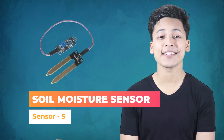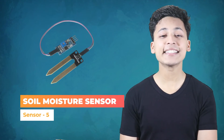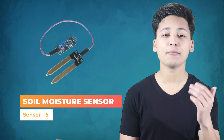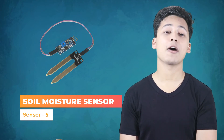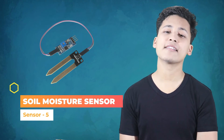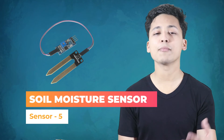The fifth sensor is the soil moisture sensor. This sensor tells you the moisture level in your soil. A project you can make with this sensor is: if the moisture in your flower pot goes down, you can automatically switch on the water supply.